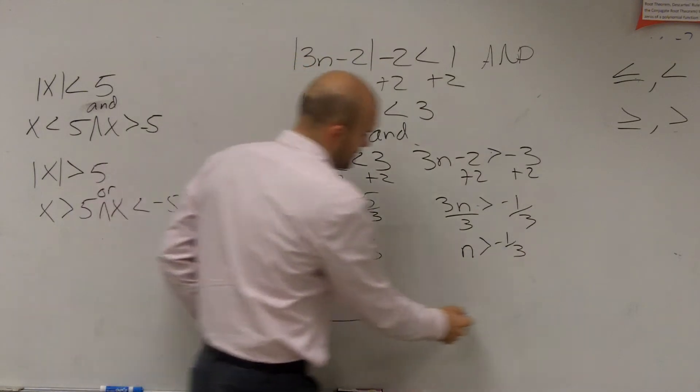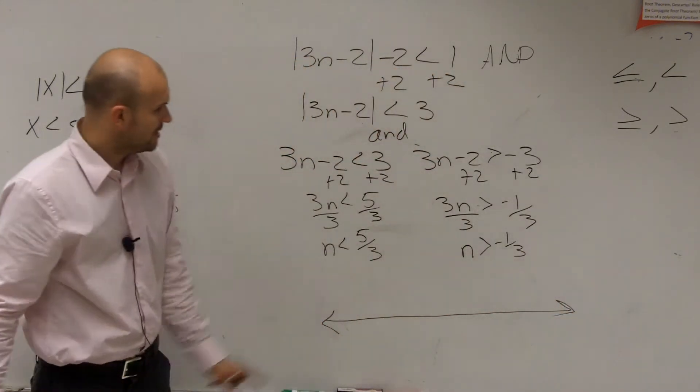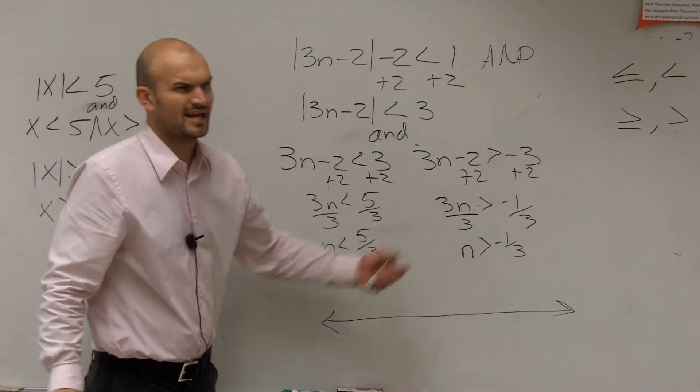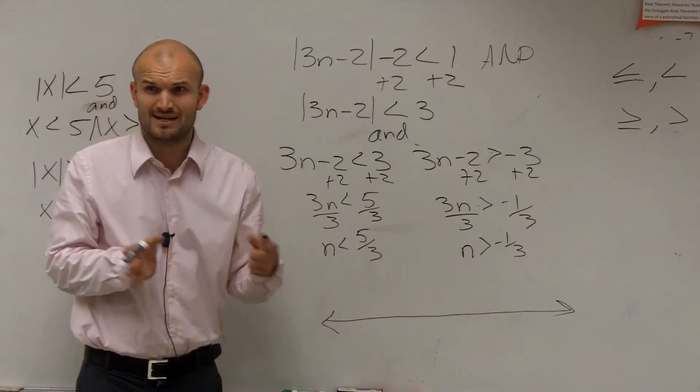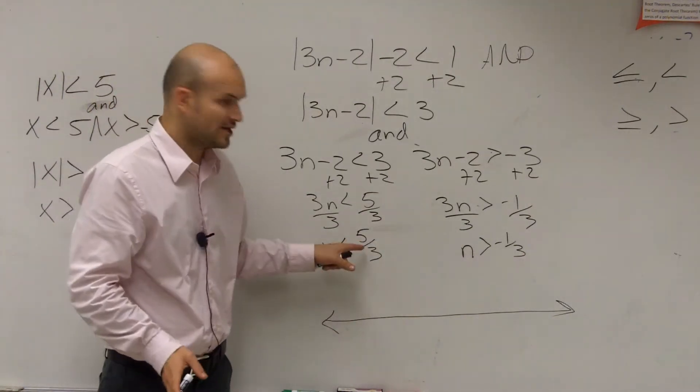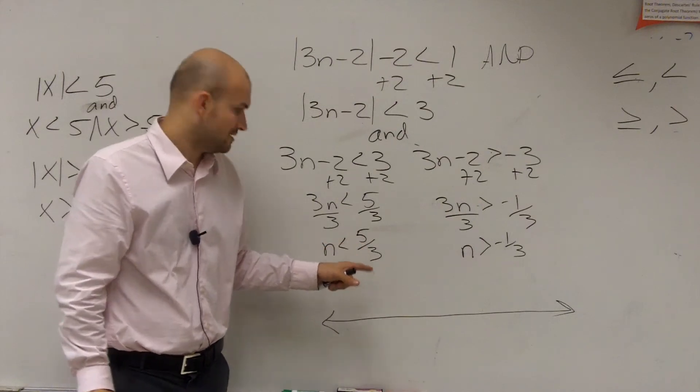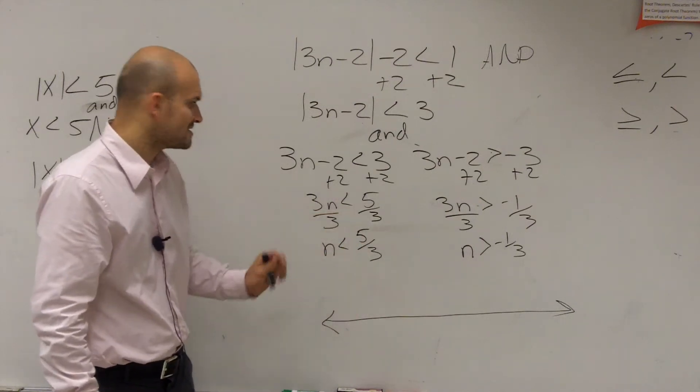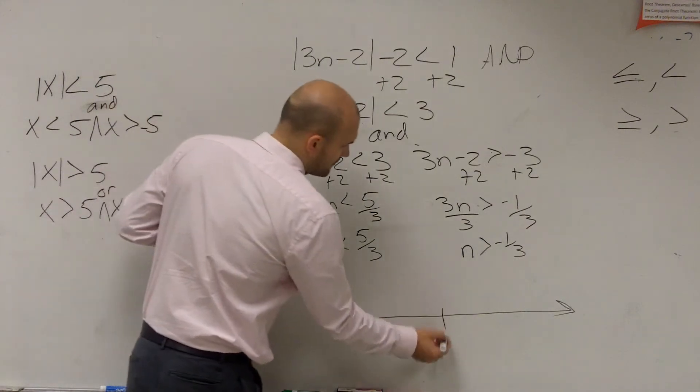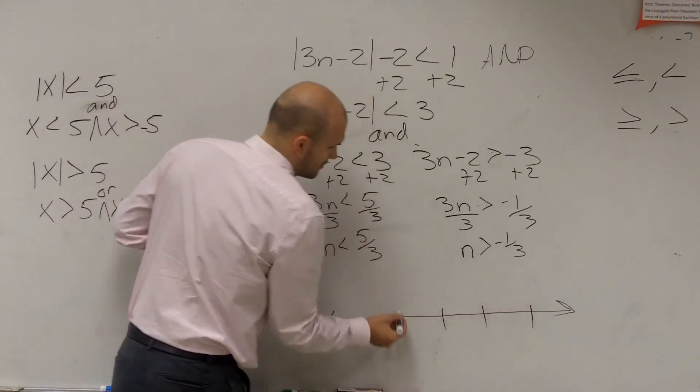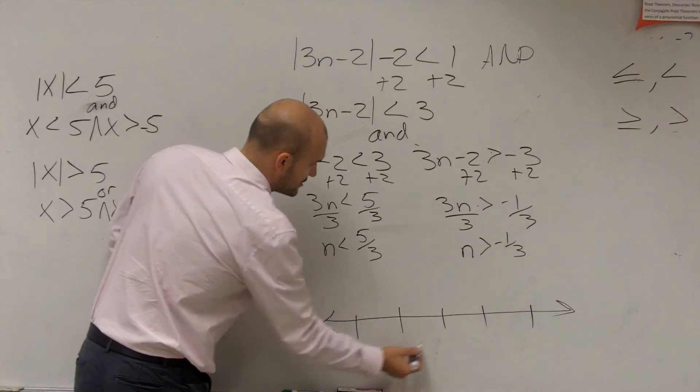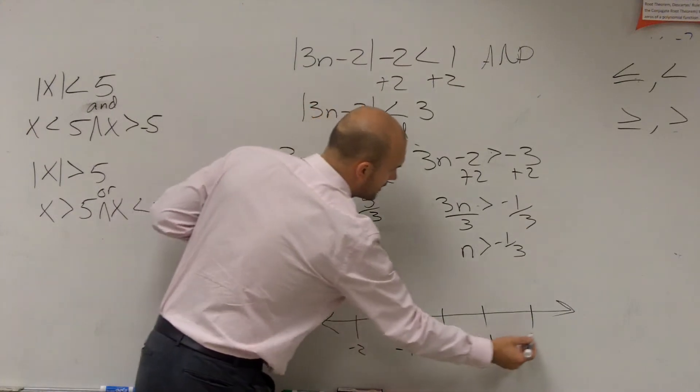So now I create my number line. On my test, I'll have a number line. I need to think, where is negative 1/3? That's between 0 and negative 1, correct? And where is 5/3? That's going to be between 1 and 2. So I'll do negative 2, negative 1, 0, 1, and 2.